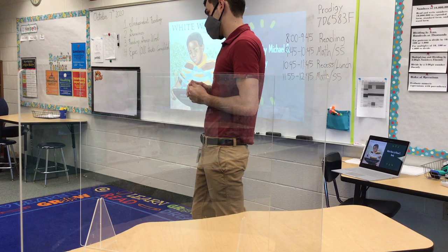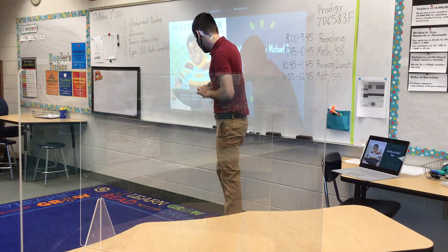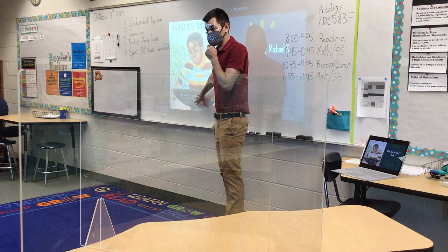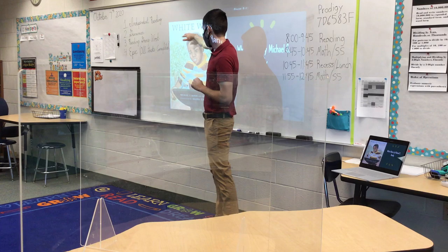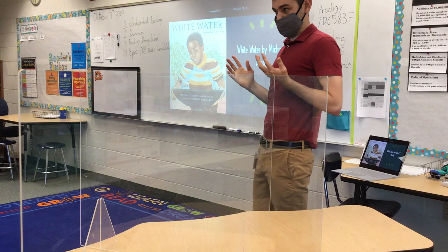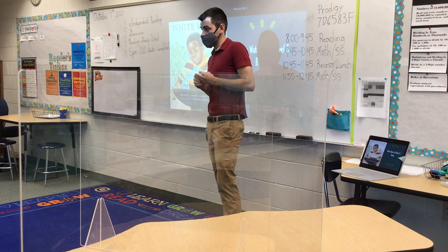Kylie is saying that she thinks only white people are allowed to drink from this drinking fountain, and she comes up with that conclusion through the title of the book — White Water — just like Micah was looking at the title. So what do you think is the time period or setting of this book?